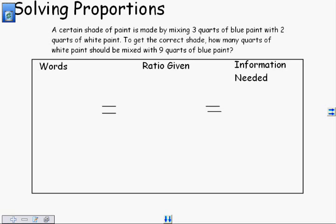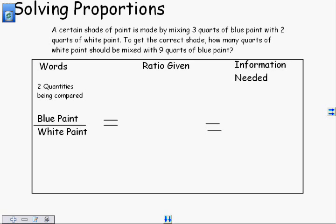The first thing I need to do is set up my words, my units, the two things that are being compared in the ratio. Here, we're comparing blue paint to white paint. This is important to identify, because if blue paint is the numerator, it needs to remain the numerator all the way through. If white paint is the denominator, it needs to remain the denominator all the way through. You've got to identify those quantities.